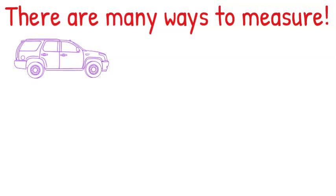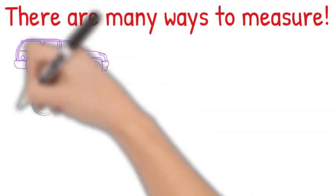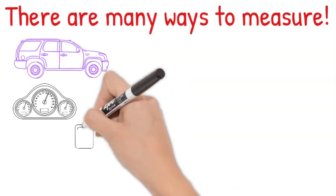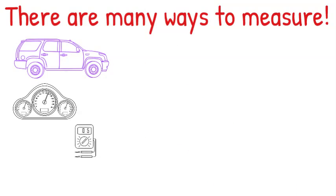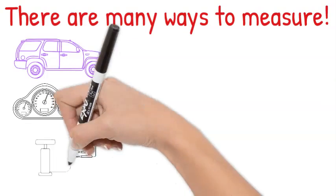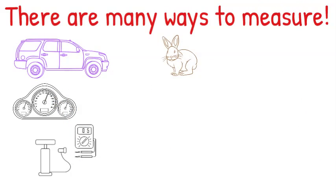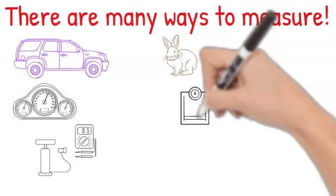There are many different ways to measure. We could measure how fast the car can go or the power of the engine. We could measure the air pressure in the tires. At the veterinarian's office, we measure the rabbit's weight.